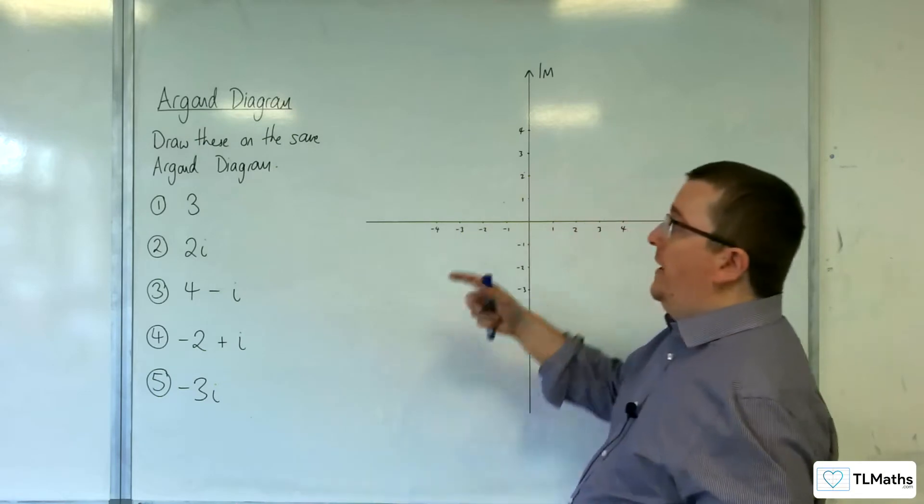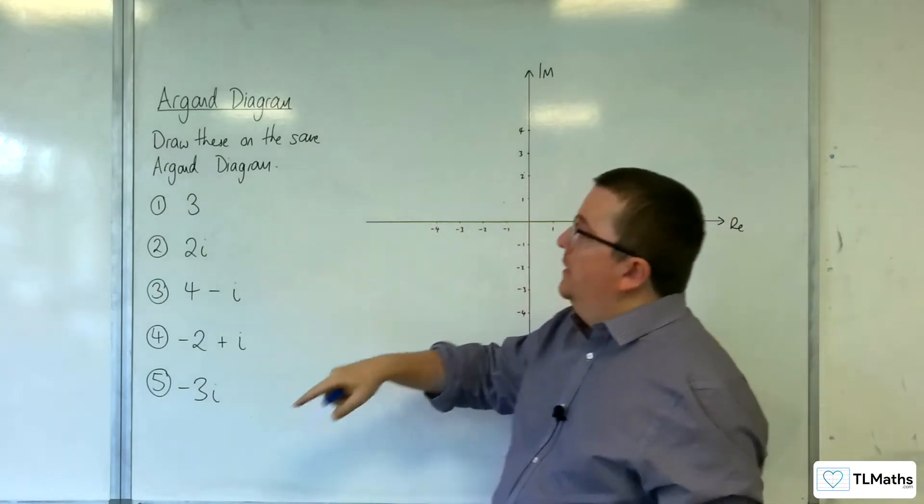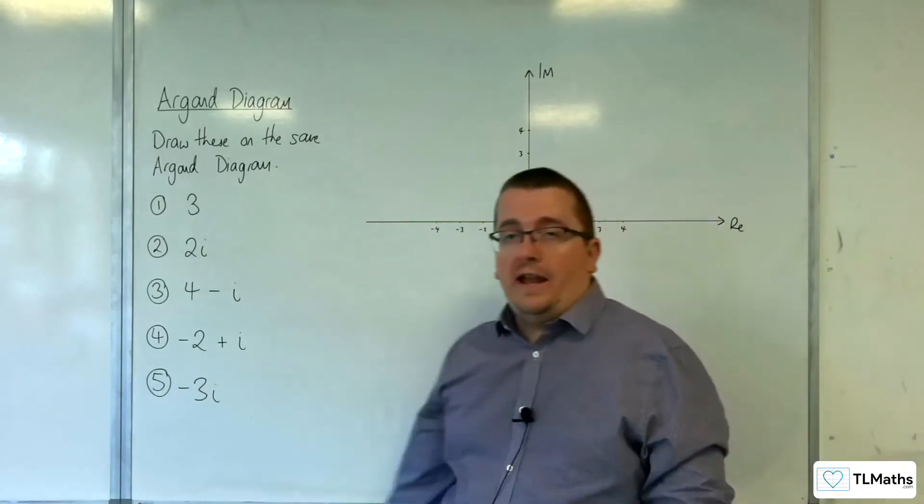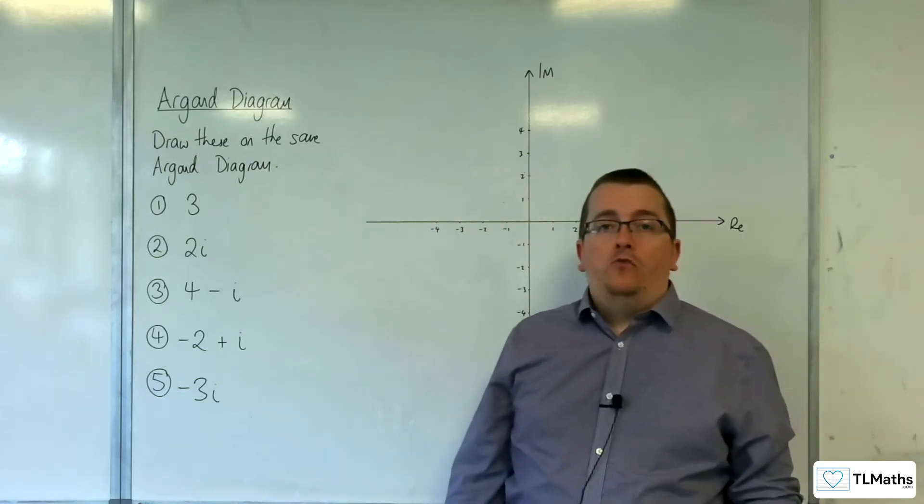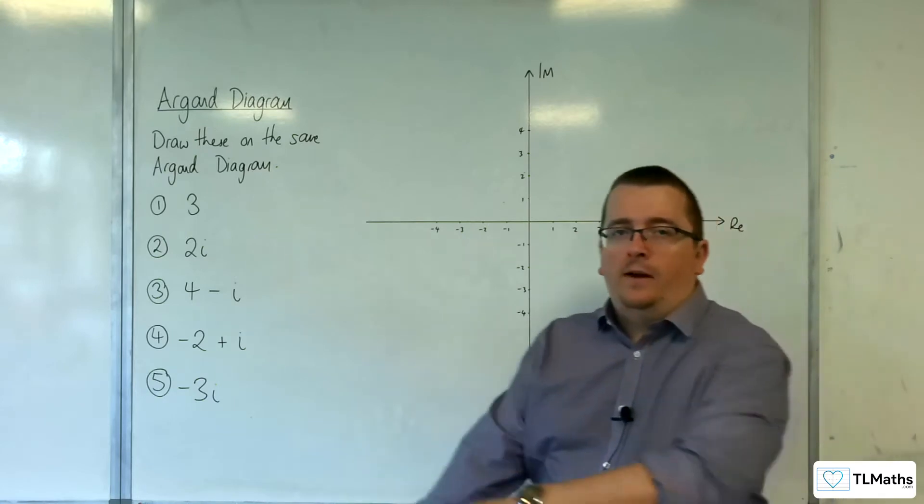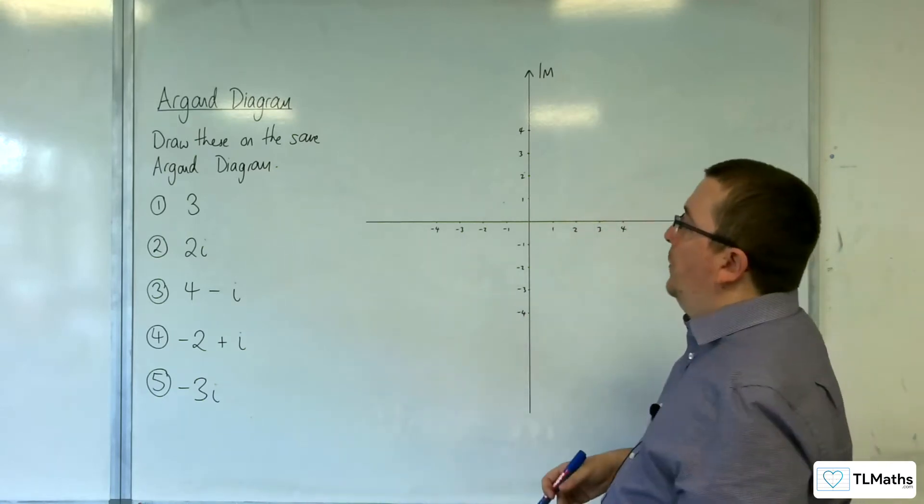In this video, what I want to do is take each of these and draw them on one Argand diagram. I'm going to choose to represent them as points rather than as vectors, otherwise it gets a little bit fiddly to visualize what's going on.